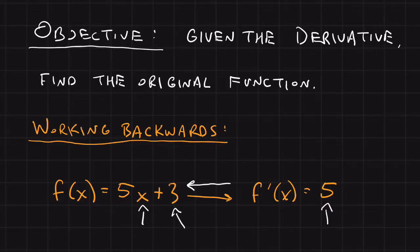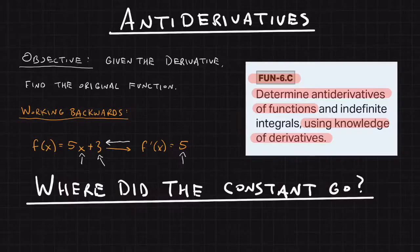What about this plus 3? How can we have known that the constant term had to have been a plus 3? Couldn't it have been a plus 5 or plus 10 or 0? Where did the constant go? How can we determine what the constant really was? When we take the derivative of a function, that constant goes to 0. It disappears.